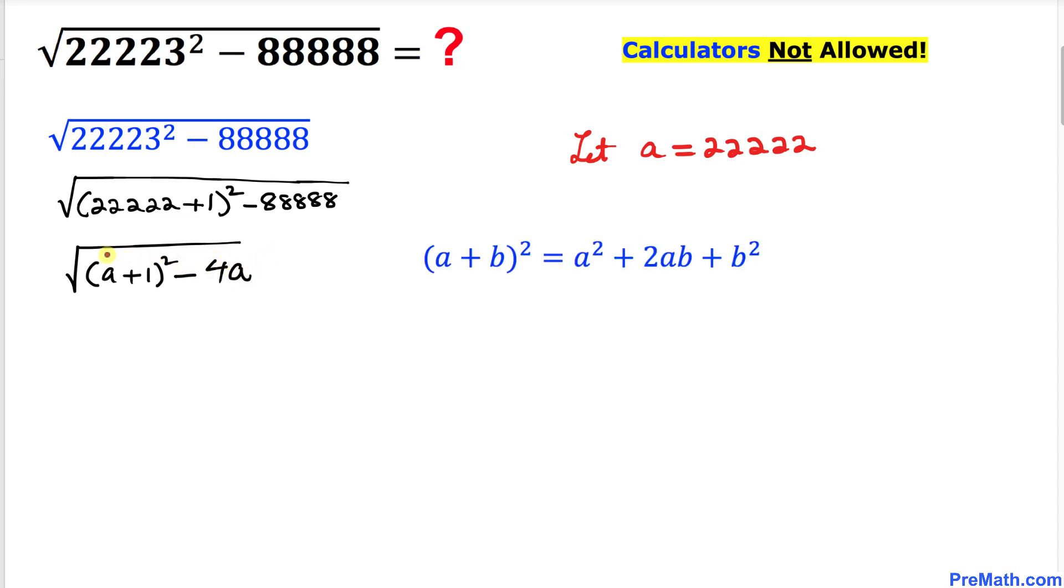And now let's focus on this part: A plus 1 whole squared. We are going to use this A plus B squared identity. So therefore this could be written as A squared plus 2A plus 1, and then I'm going to write down minus 4A.